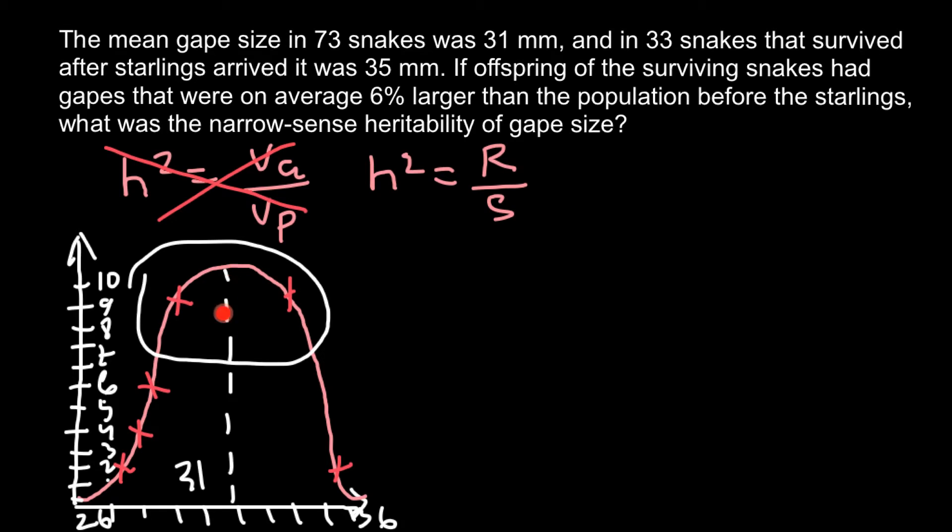So the mean would shift to the right, because frequency of these phenotypes would be more prevailing than frequency of these phenotypes. So new mean would be somewhere here. And we are given the number that is 35 millimeters. So previous one was 31 and it shifted to 35.